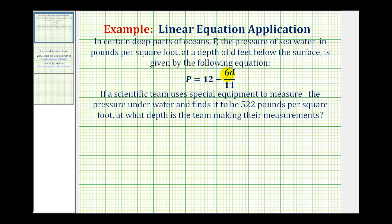p equals 12 plus 6d divided by 11, where p is the pressure in pounds per square foot and d is the depth below the surface in feet.